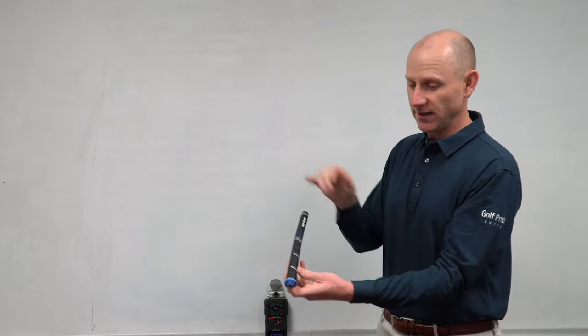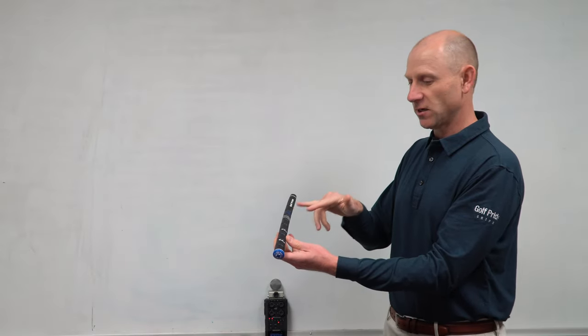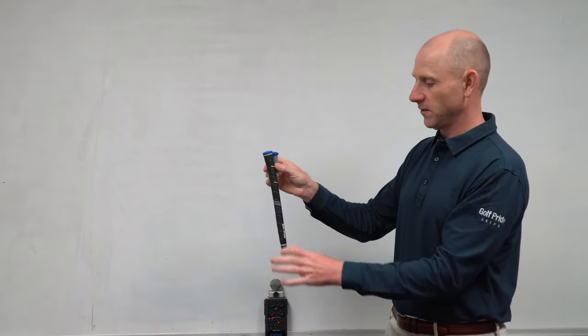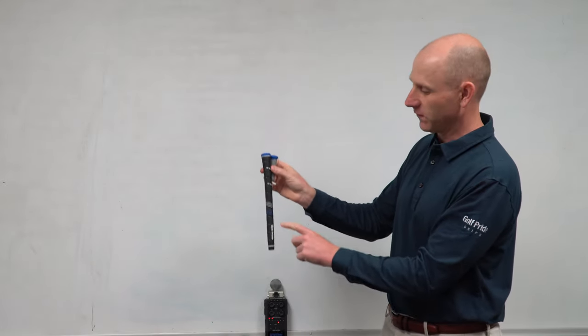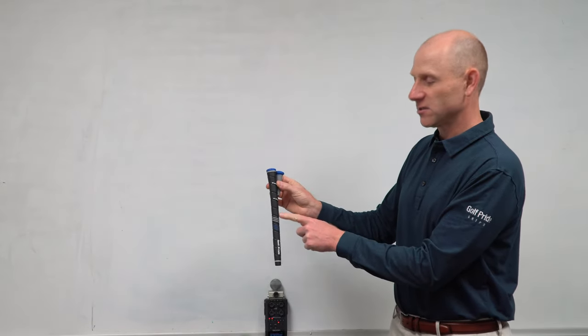the clubface is during the swing, and that's what this control core provides to the CP2 model. It has soft material, it has the control core built into every single model, and all the CP2s have a reduced taper profile. When I talk about that reduced taper in the lower hand, it just doesn't taper